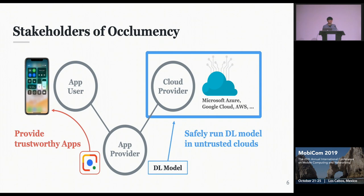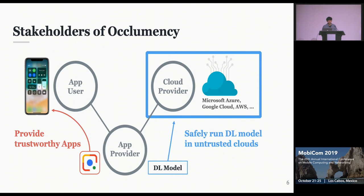Occlumency is a system for an app provider. As you can see in this figure, we have three stakeholders: the app user, the app provider, and the cloud provider. By using our system, the app provider can safely run their model inside untrusted clouds so that they can provide a trustworthy application to their users.